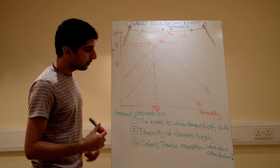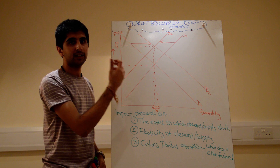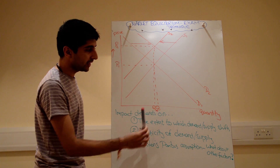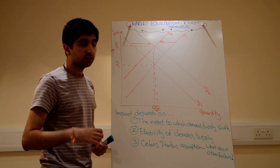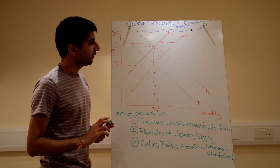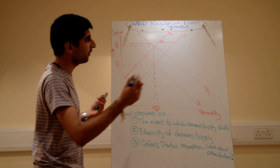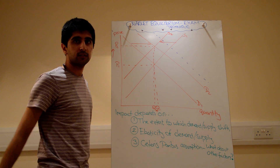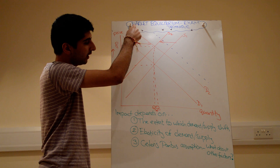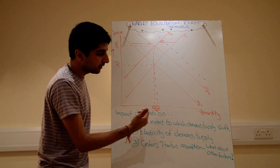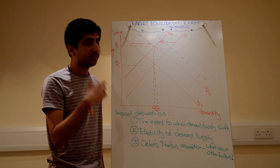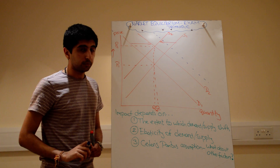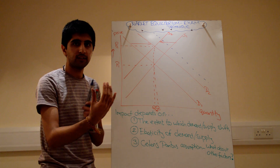The comment part is about what the impact of the demand and supply shifts depends on. The impact of the shifts on price and quantity depends on the extent to which demand and supply shift. For example, if I shifted demand further to the right, quantity would have increased more. Or if I shifted supply more to the left, quantity would have decreased further and price would have increased further. The extent to which the curve shifts — whether more or less — is the first evaluation point.